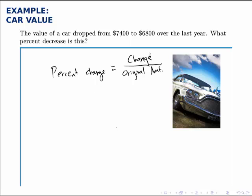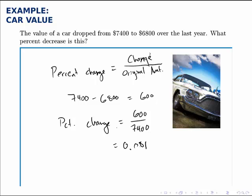So the difference between $7,400 and $6,800 is $600. So if we divide the $600, the change, by the original amount, the $7,400, we get an answer of 0.081.